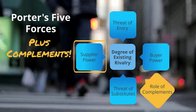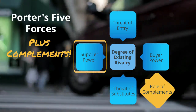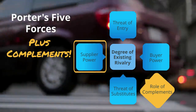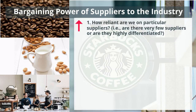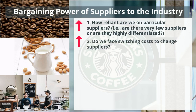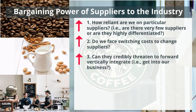Now let's talk about the factors that influence the bargaining power of suppliers to the industry. For example, suppose we're Starbucks, and some of our suppliers include coffee bean suppliers, dairy suppliers, and baristas. For each of these categories, we're going to ask how reliant are we on particular suppliers — are there very few suppliers, or are they highly differentiated? We also want to know if we face switching costs to change suppliers. Can they credibly threaten to forward vertically integrate into our business? These things will increase their power.